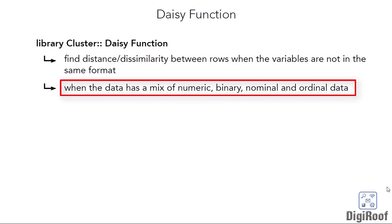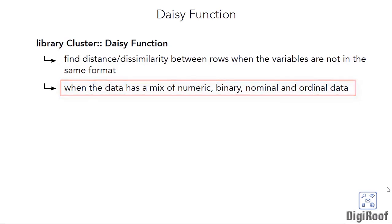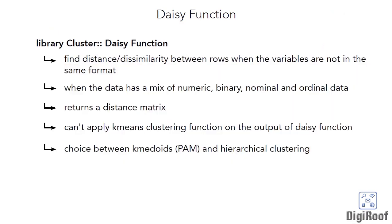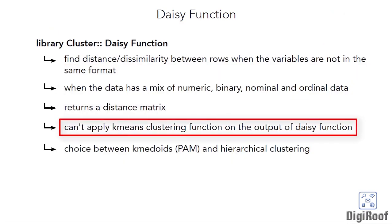The daisy function is capable of handling such data types. Once you pass data to the daisy function, it would return a distance matrix that signifies the distance between each of the rows. Using this distance matrix, you can then apply a preferred clustering method. One thing to note is that you would not be able to apply k-means clustering on the output of the daisy function.